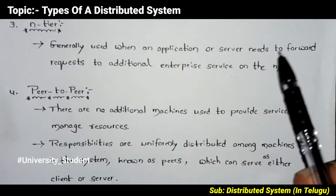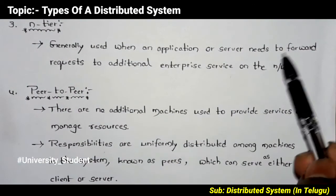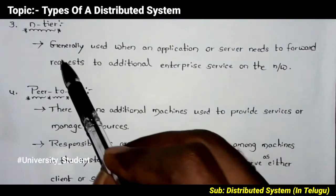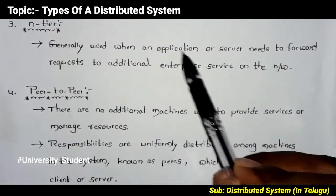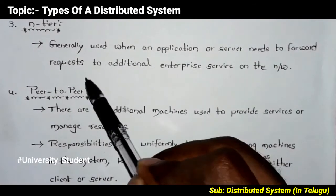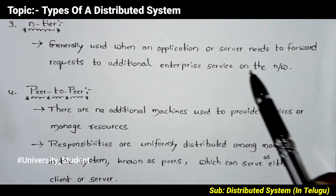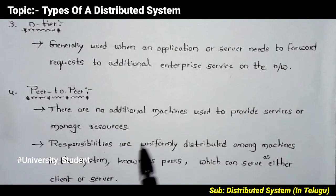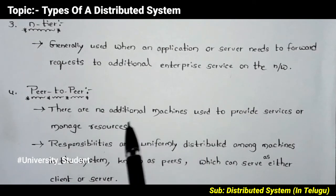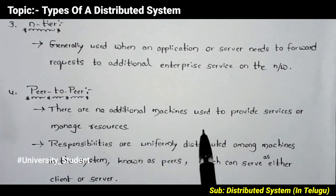The n-tier architecture needs to forward requests to additional enterprise services on the network. The fourth model is peer-to-peer, where there are no additional machines used to provide services or manage resources.